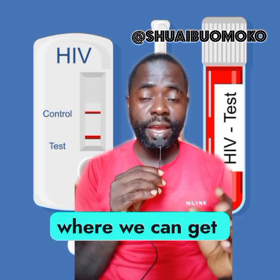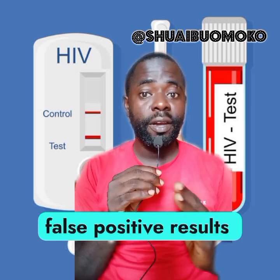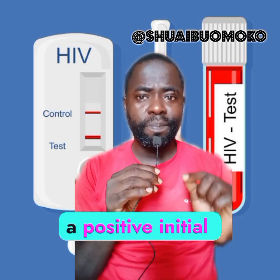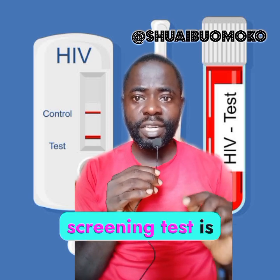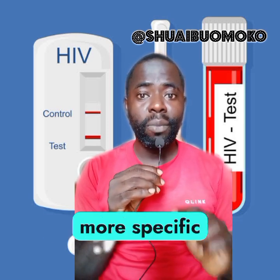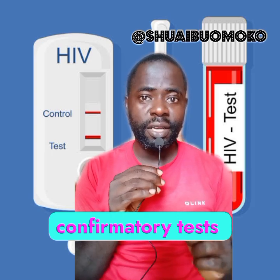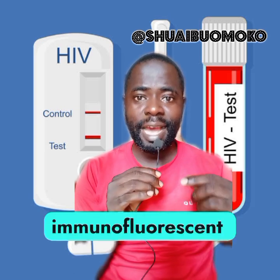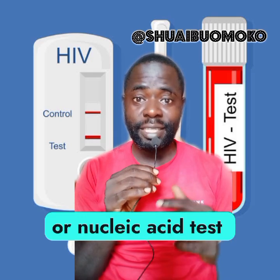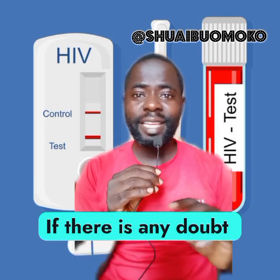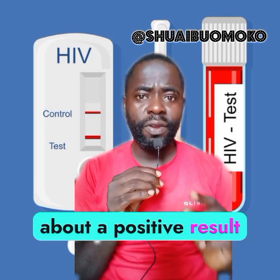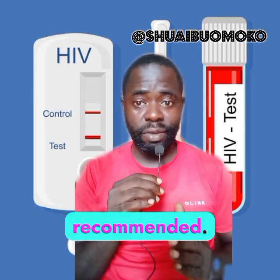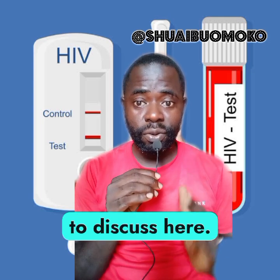So these are some of the reasons we can get a false positive result on an HIV test. To confirm an HIV diagnosis, a positive initial screening test is usually followed by more specific confirmatory tests, such as the Western blot, indirect immunofluorescent assay, or nucleic acid test (NAT). If there is any doubt about a positive result, further testing and consultation with a healthcare professional is recommended.